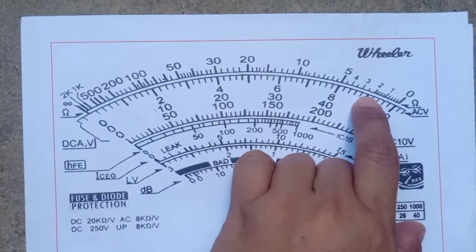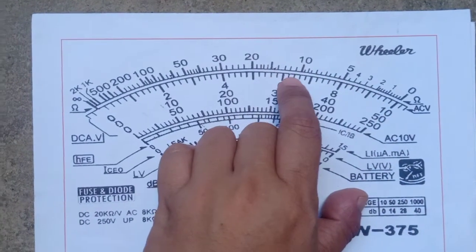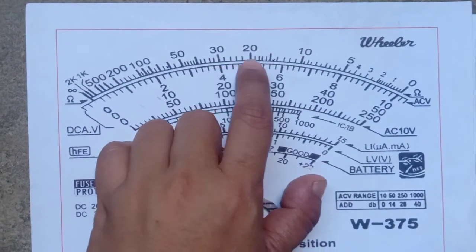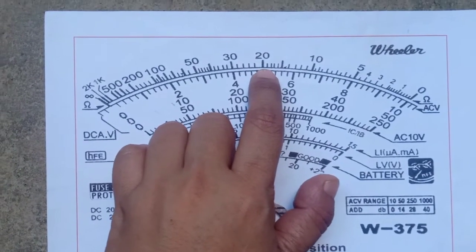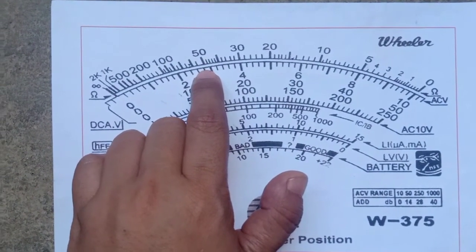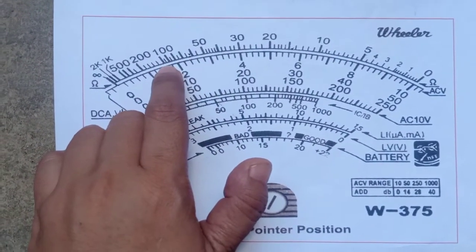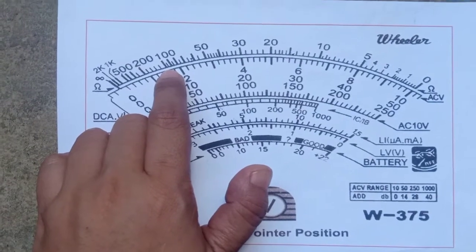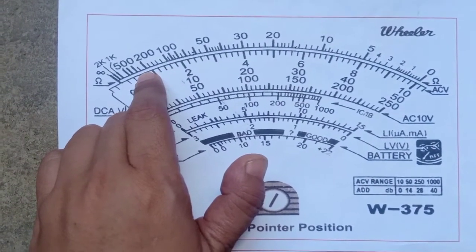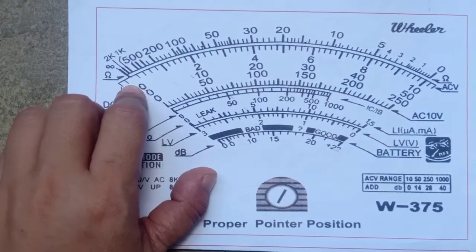0 to 2, ang measurement kada lines ay 0.2. 2 to 10, 0.5. 10 to 20, 1. 20 to 50, that is 2 bilang ng kada lines. 50 to 100, 5. 100 to 200, 20. 200 to 500, yung kalahati 50, but the rest is 100.